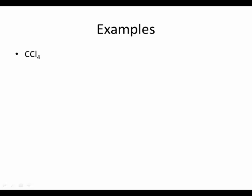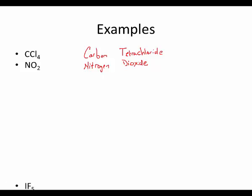Some examples: carbons and chlorines — all nonmetals. Carbon: you don't use mono for the first element if there's only one, so just 'carbon.' Four is 'tetra,' so it's 'carbon tetrachloride.' Next: nitrogen dioxide. The 'di' with 'oxide' is fine — no vowel issue there. Then iodine pentafluoride: 'penta' plus 'fluoride.'